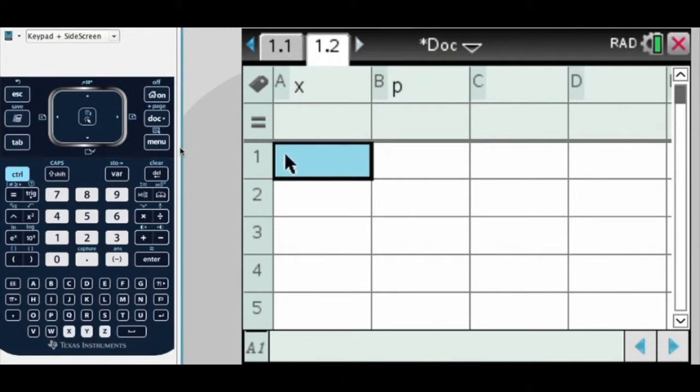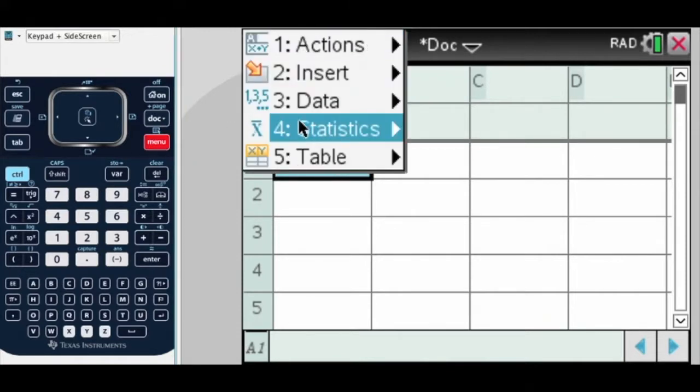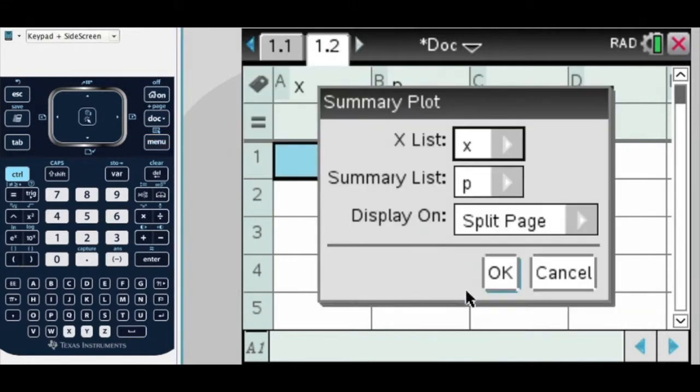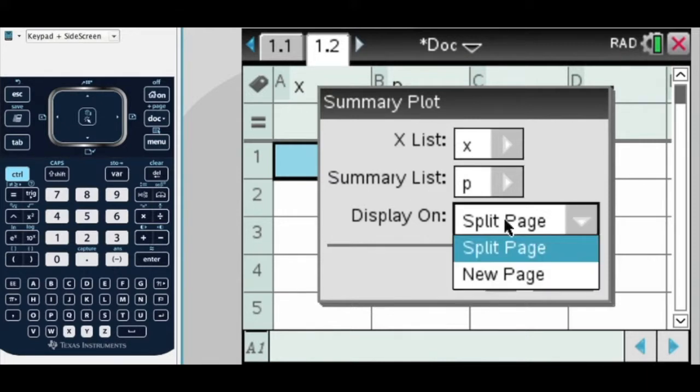Then from here, I'm going to press menu, data, and summary plot. Okay, so the x list is x, the summary list is p, and I want to choose a new page so we can see it better.